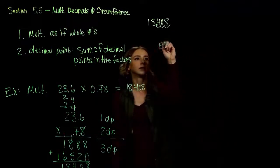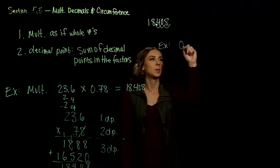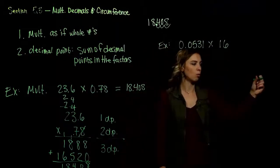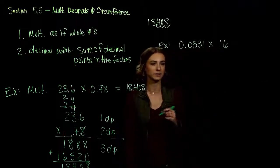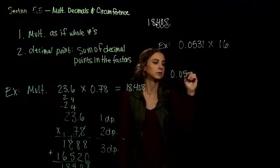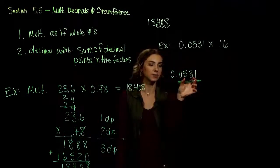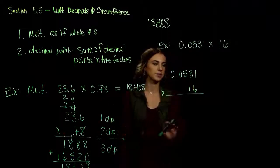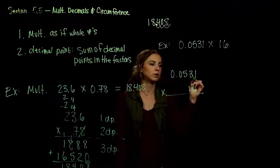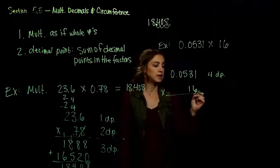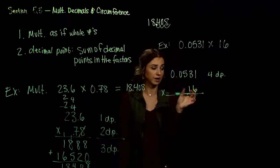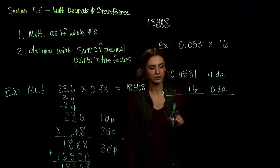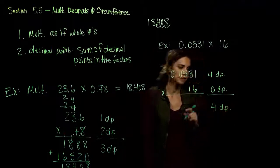So let's take another one. We'll take 0.0531 and multiply by 16. We only have that one decimal to worry about. We treat this number as 531 and multiply by 16. Let's take inventory of our decimal places. In the top value, we have one, two, three, four decimal places. In 16, we don't have any because it's a whole value — zero decimal places. So in the end, after we look at our product, we're going to have to move in four decimal places — the sum of those.